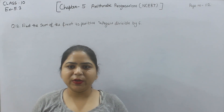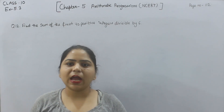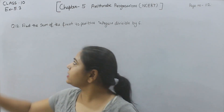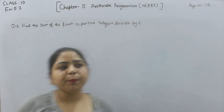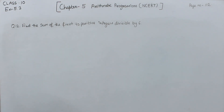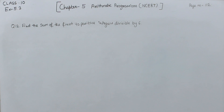Hello everyone, this is Preeti. We are here with another question of Exercise 5.3, page number 112, question number 12. This question asks us to find the sum of the first 40 positive integers divisible by 6.